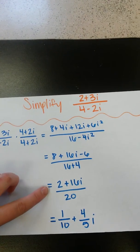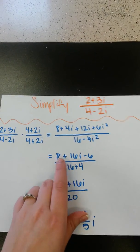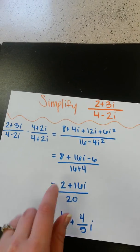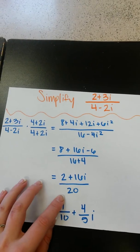So then, we reduce this down by adding the 8 and the negative 6. So that gives us 2. And we also add the 16 and the 4 to get 20.